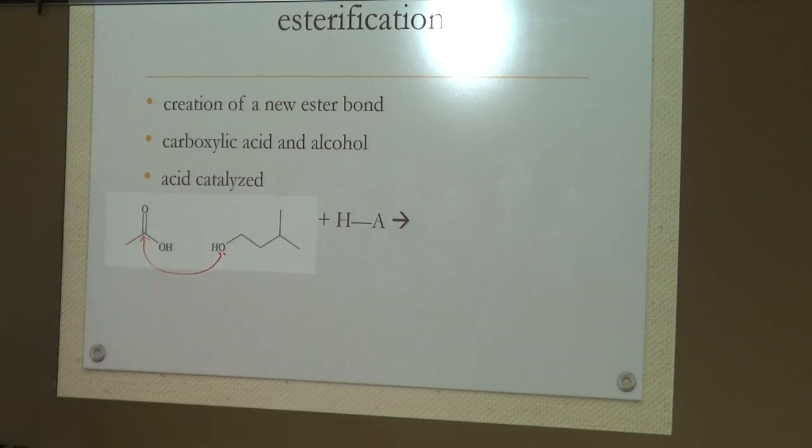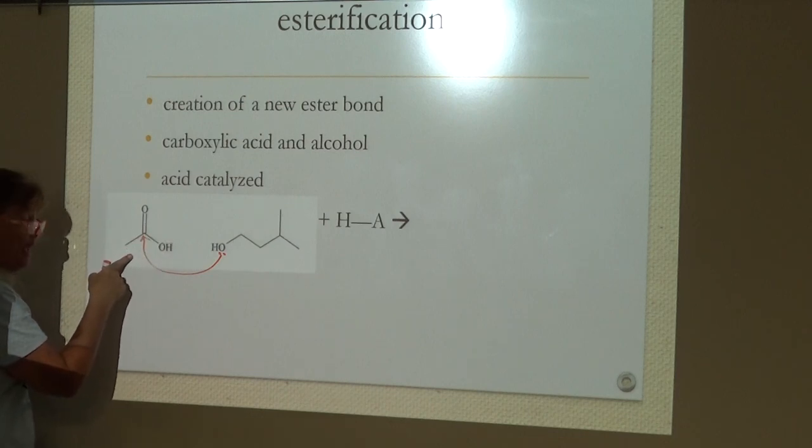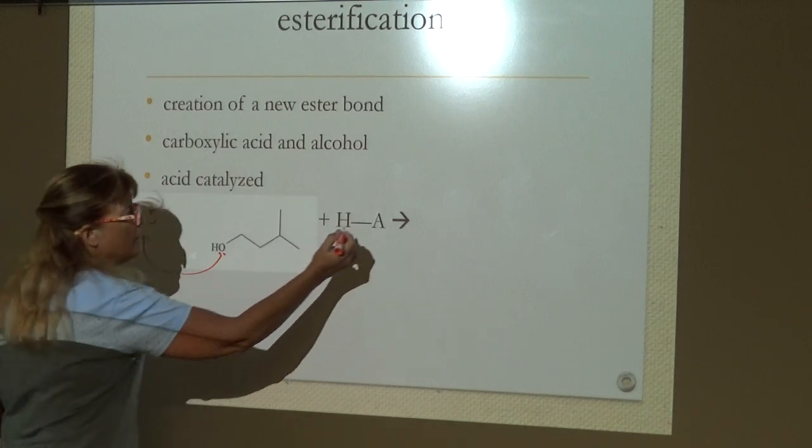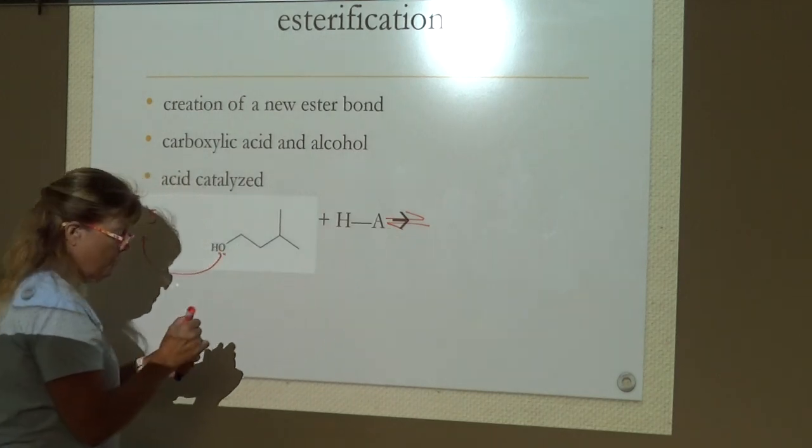Here again they're donated to the carboxyl carbon. That carbon already has four bonds, so something's got to give, and that would be the pi bond. Here again, pi bonds are weaker than sigma bonds, so that's what gives first.